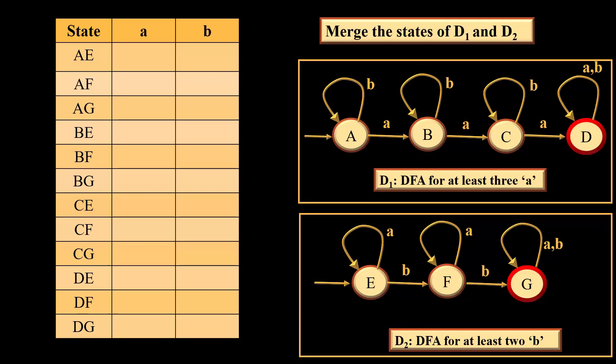Now in order to find an expression, that means DFA for at least 3a and at least 2b, we will merge the states of D1 and D2. D1 has 4 states and D2 has 3 states. The merge table will have 12 states in all with the inputs A and B, which are shown on the left side of the slide as a table form.